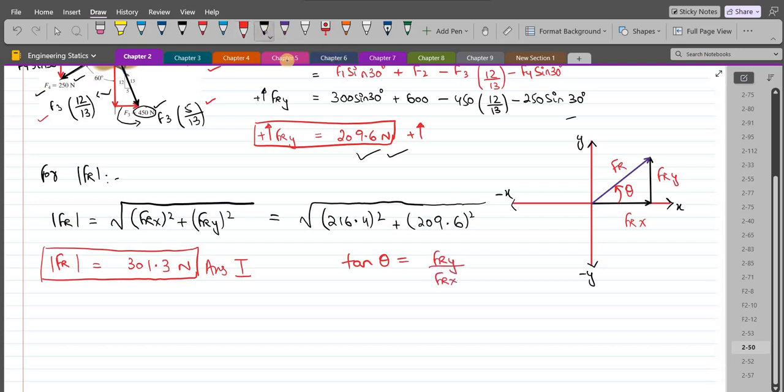So tan theta equals FRy, which is 209.6, over FRx, which is 216.4.